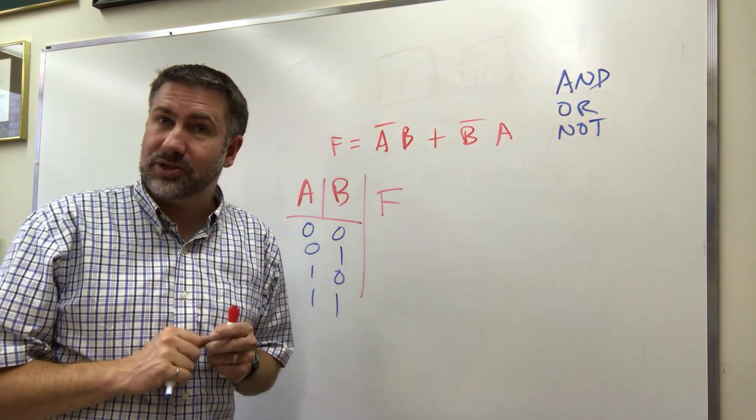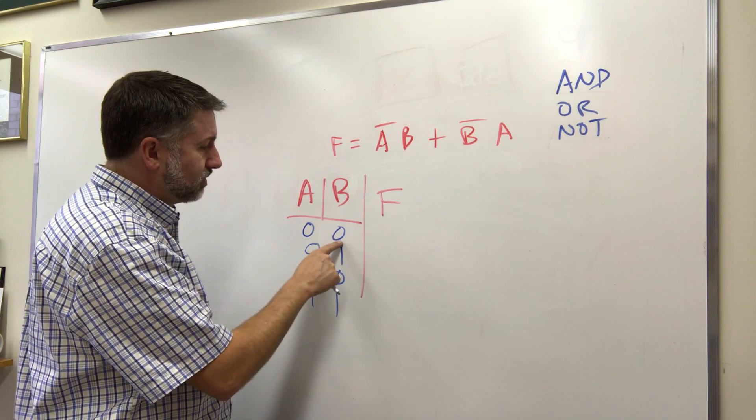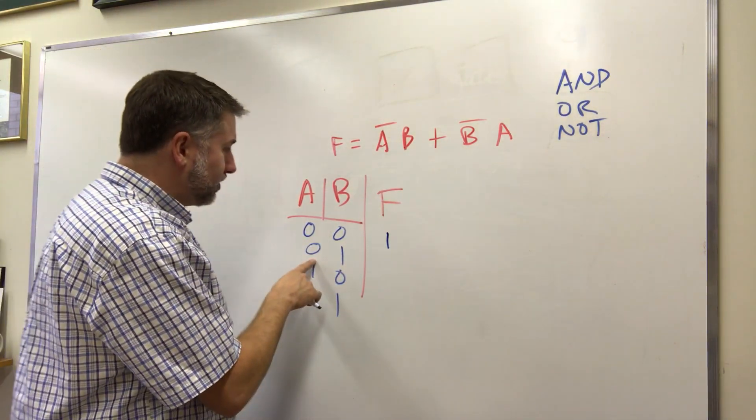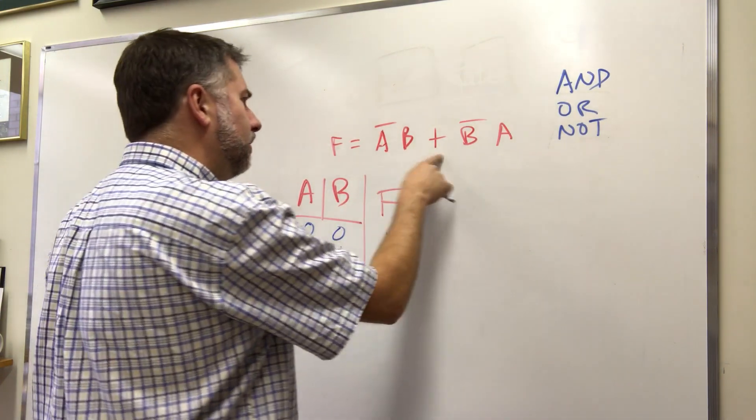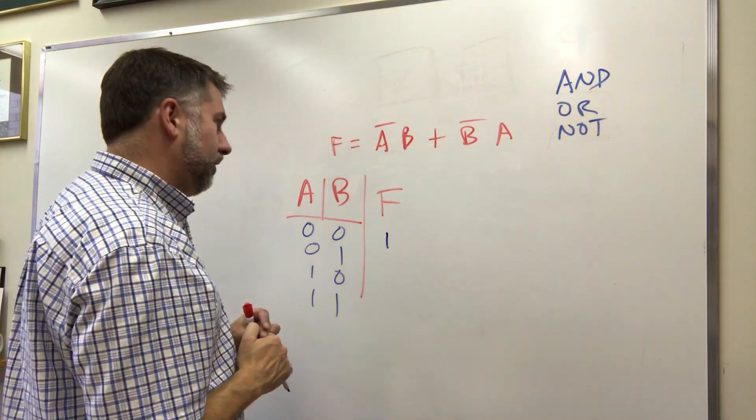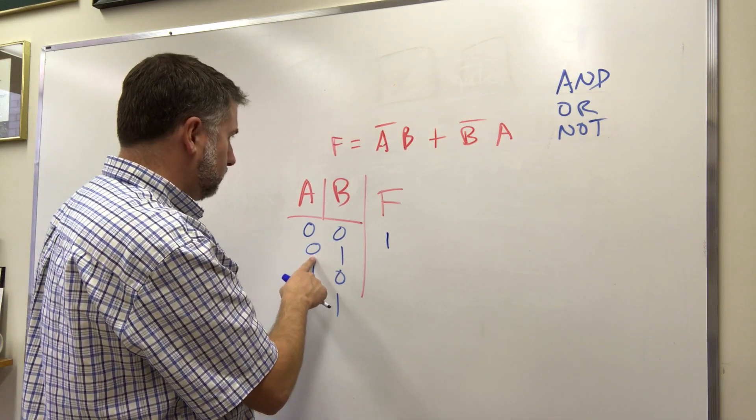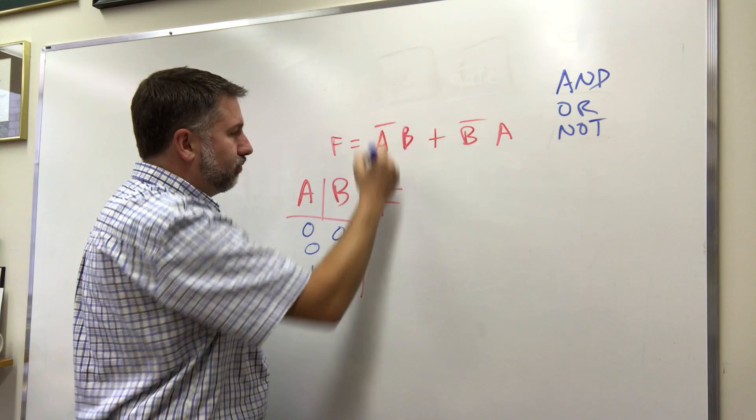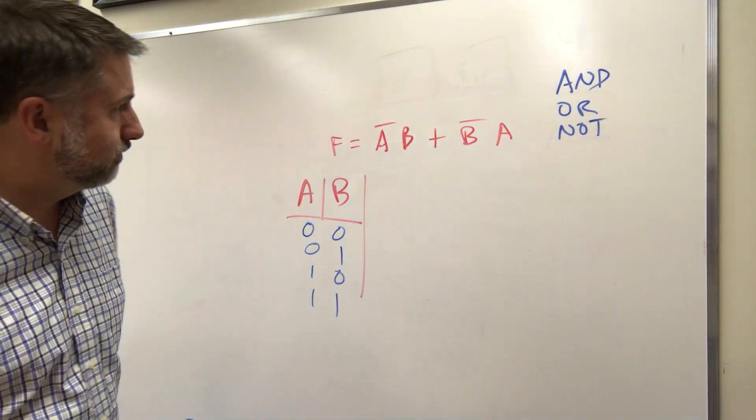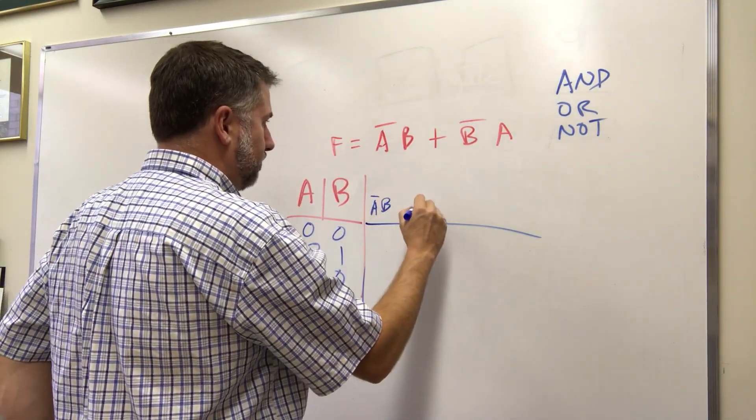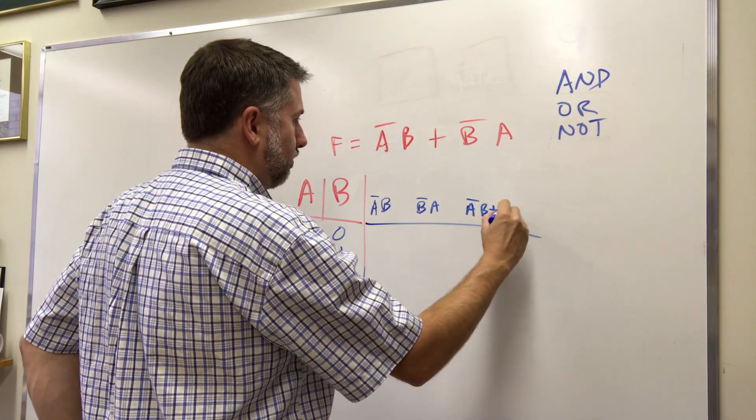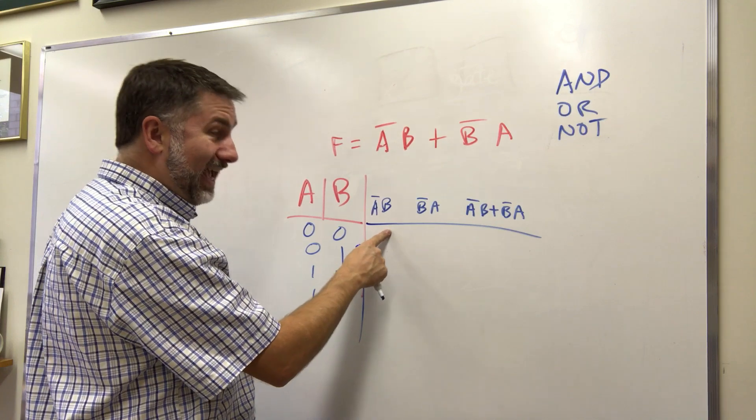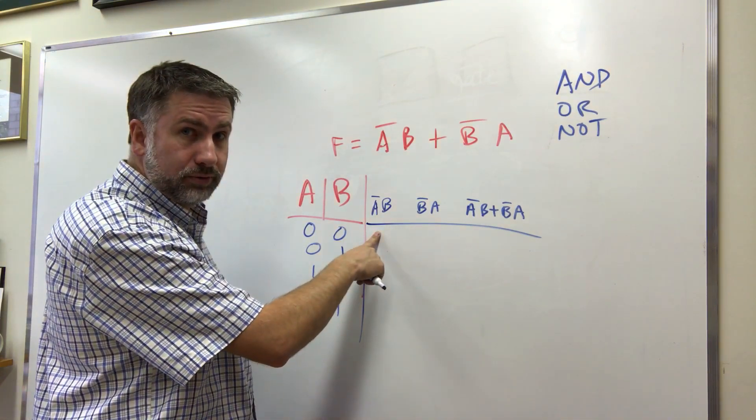All we have to do is plug them in one at a time and see what happens. If A is zero and B is zero well A prime B is going to be one and B prime A is going to be one so our output will be... wait, let me recalculate. If A is zero then this one here, let's move this over so we can notate this whole thing: A prime B, B prime A, and then the complete A prime B or B prime A.